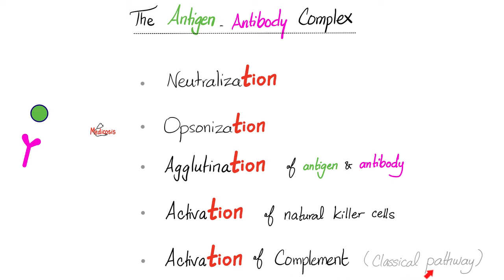We have three complement pathways. Number one, the classical pathway. Number two, the alternative pathway. Number three, the mannose-binding lectin pathway.